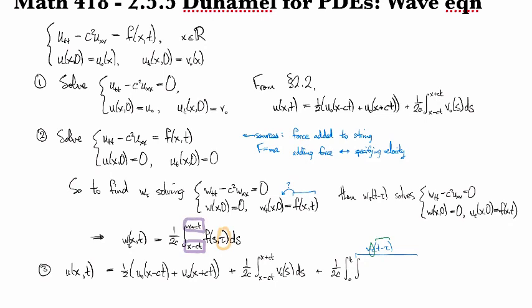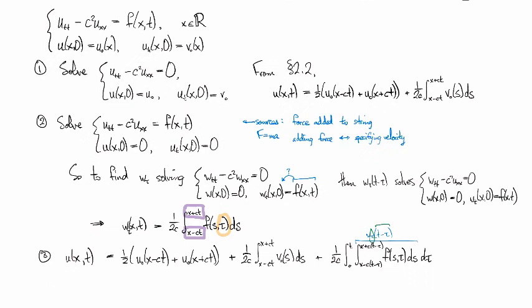So this is going to be X minus C(T minus tau) to X plus C(T minus tau) because it got shifted. And then we're going to have F of (S,tau). And it doesn't get messed with because this is the tau corresponding to the parameter value for the particular W that we are integrating over. Okay, so this whole part here is our complementary solution.